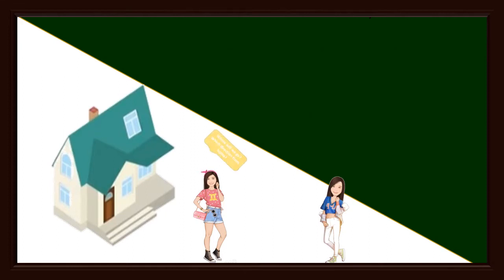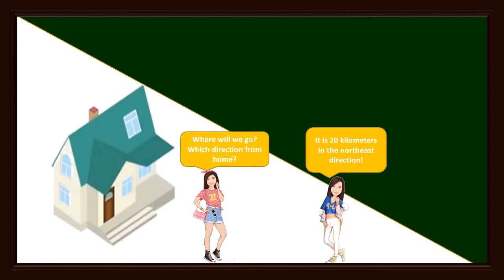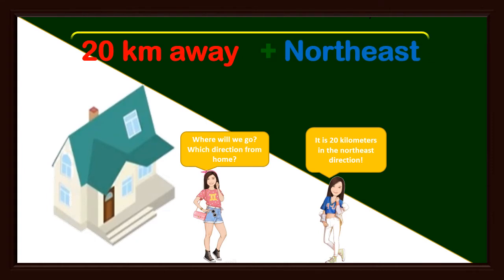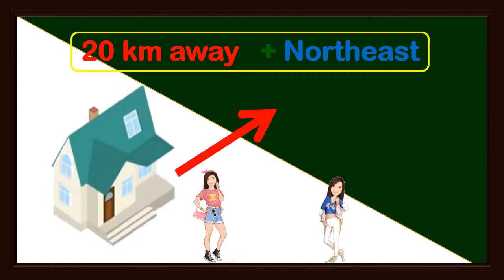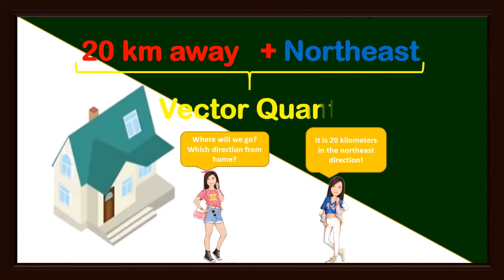Your question to her would probably be: which direction from home? And then when you are told that it is 20 kilometers in the northeast direction, you have the precise information. This now becomes two-dimensional information. The store is over there. Two-dimensional information like this is called a vector quantity.